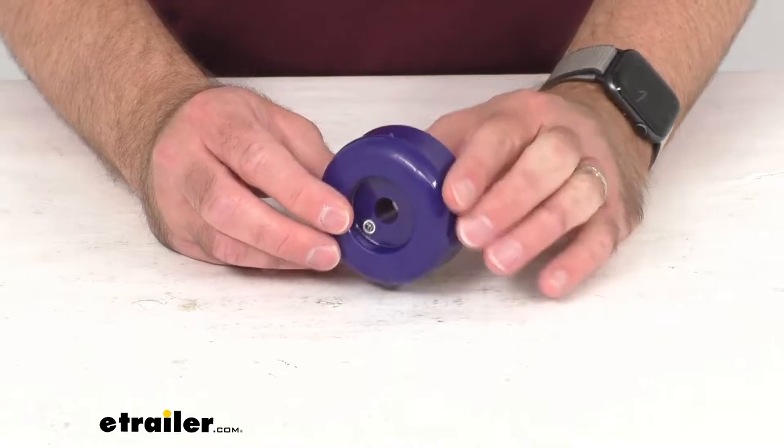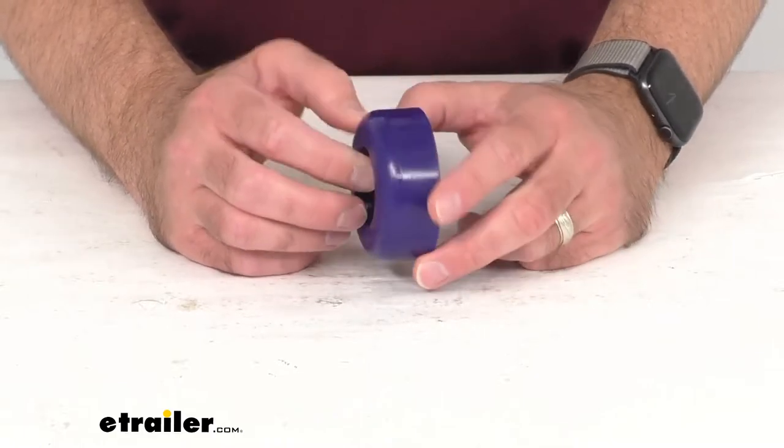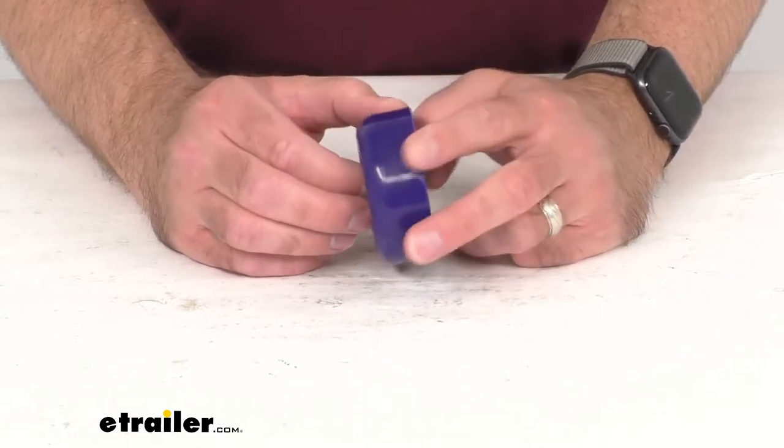Not only do the end caps provide more surface area for better boat to trailer contact, but they also help to keep your boat from being scratched by sharp bracket edges.